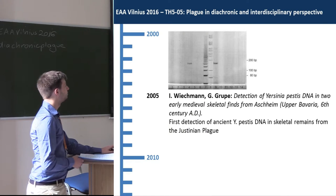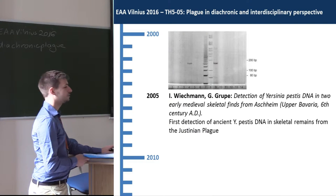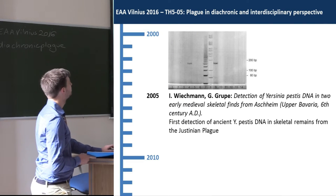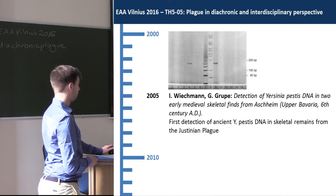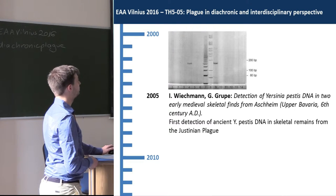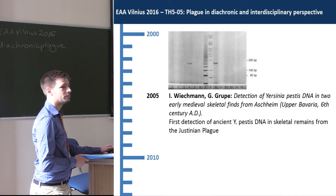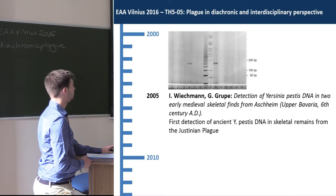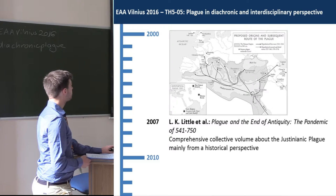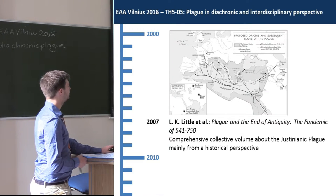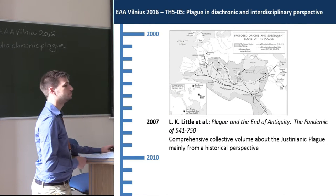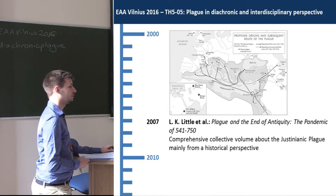In the next year, after all the ancient DNA results had been doubted, Wichmann and Grupe published the first confirmed detection of ancient Yersinia pestis DNA in skeletal remains from the Justinianic plague in Germany — we will hear more about this later. In 2007, a major collective volume was published by Little about the Justinianic plague.